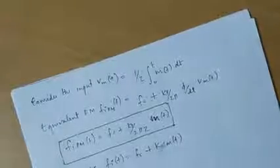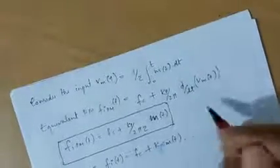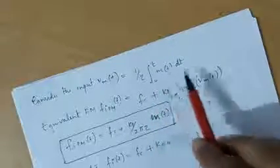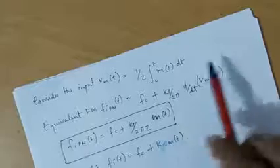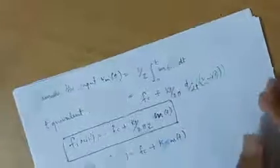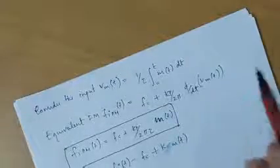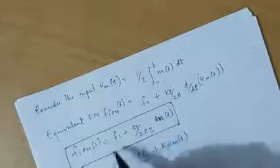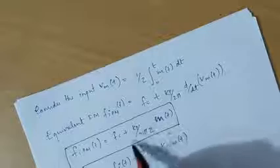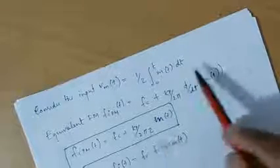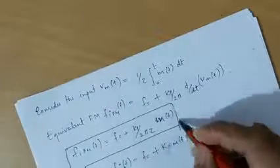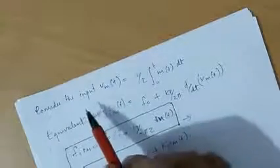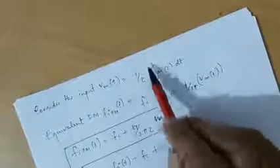Now we substitute v_m(t) into the expression. The differentiation and integration nullify each other, so this expression simplifies. The instantaneous frequency of PM then becomes f_c + (k_p / 2πτ) · m(t). The general expression: if you give an input v_m(t) = (1/τ) ∫₀ᵗ m(t) dt, the instantaneous frequency reduces to this simplified form.